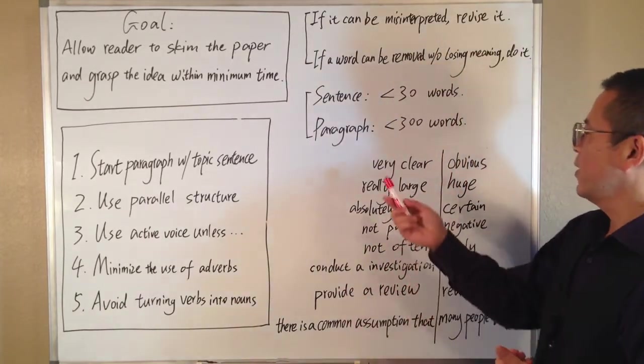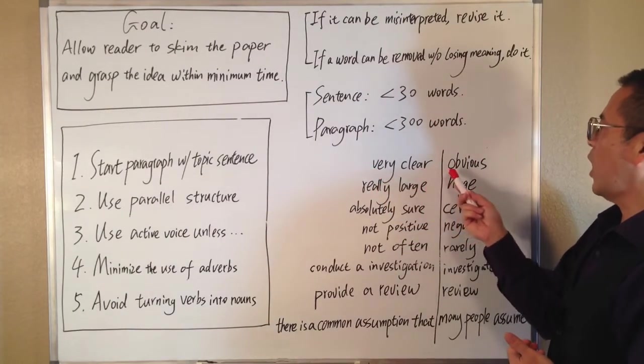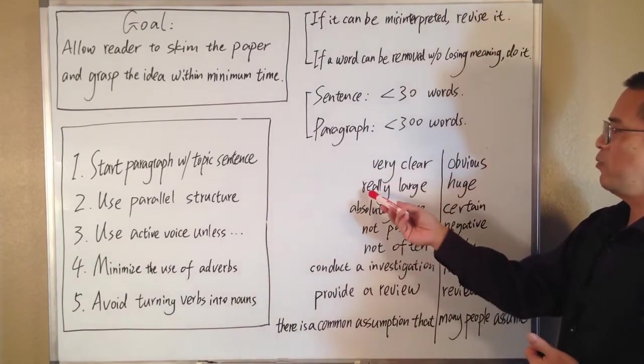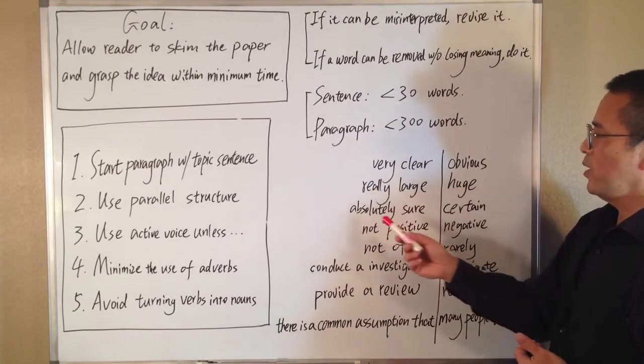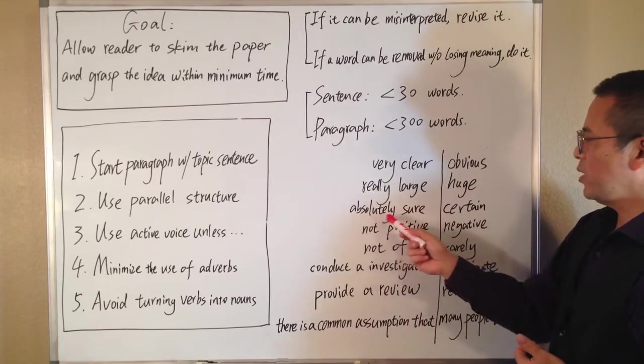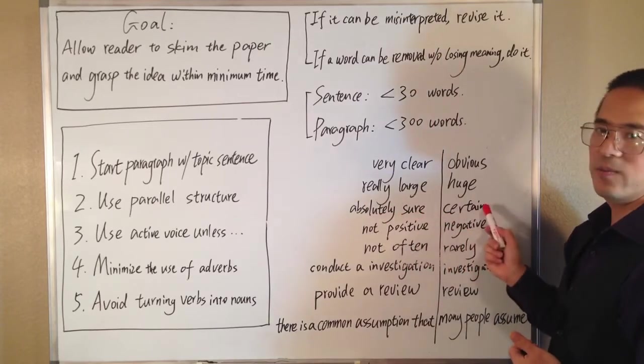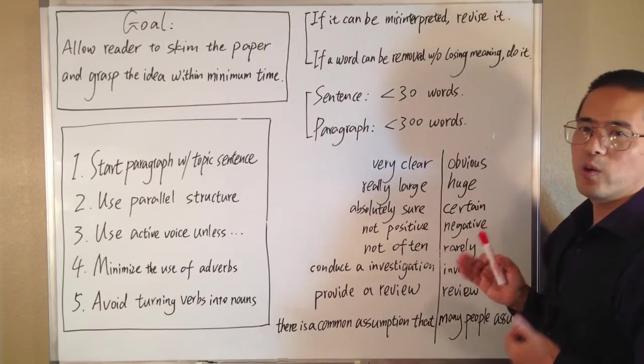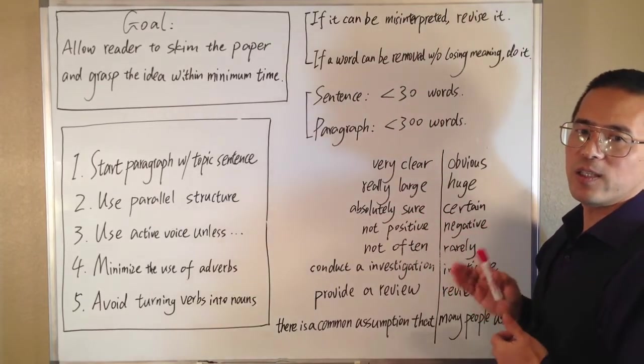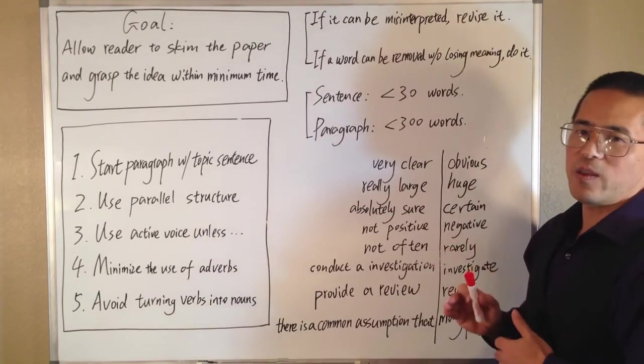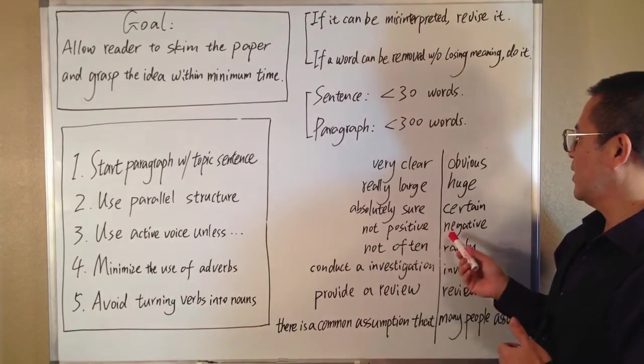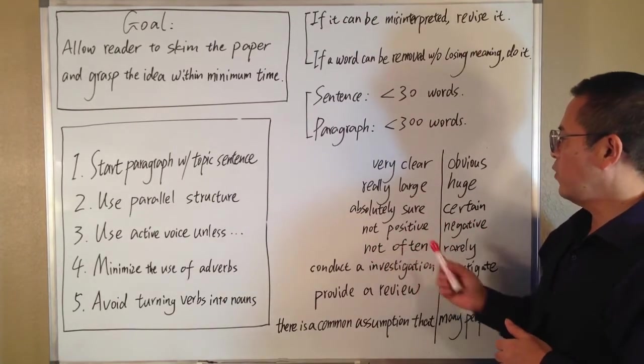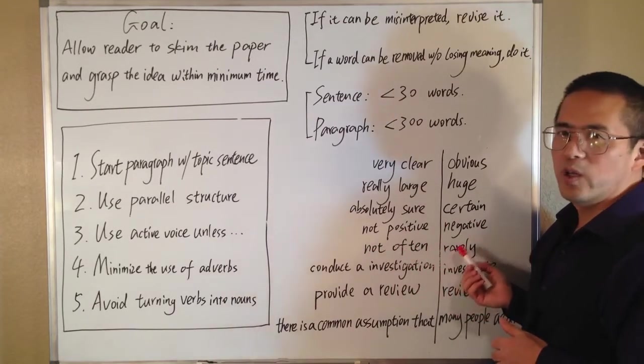For example, instead of very clear, we may say obvious. Instead of really large, we may say huge. Instead of absolutely sure, we may say certain. Also, we prefer to use affirmative words instead of not something. For example, instead of not positive, we may say negative. Instead of not often, we may say rarely.